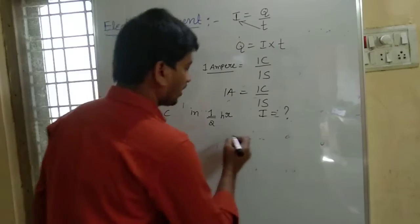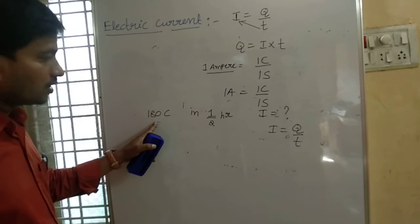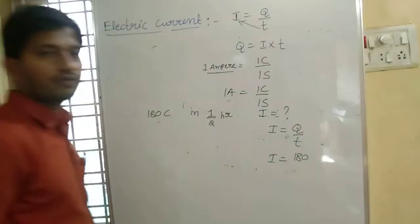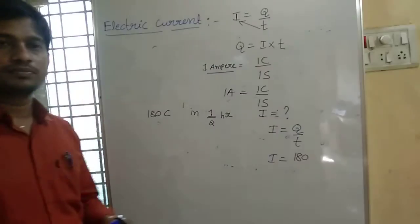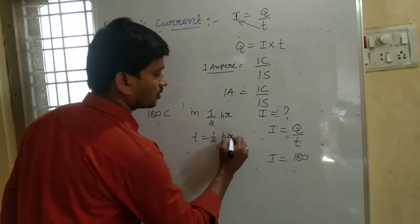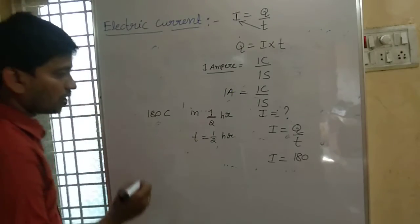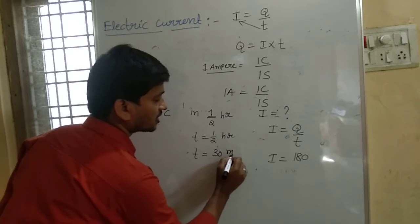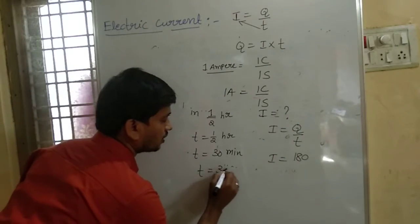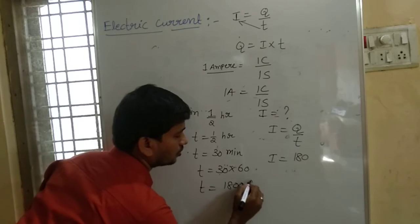As we know the formula I equal to Q by T. Charge Q is 180 Coulombs. Time is given as half an hour. The SI unit of time is seconds, so we convert: half an hour is 30 minutes, and 1 minute equals 60 seconds, so T equals 30 into 60, which is 1800 seconds.